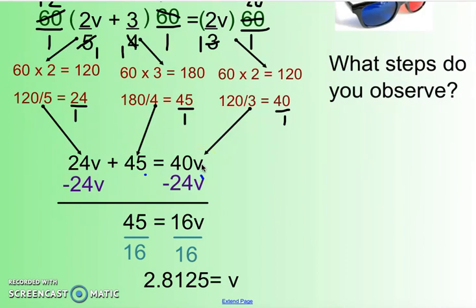I can take 24 and move it over to the other side to be with the 40v, and the way to do that, remember, is do the opposite. If it's positive, then we put minus 24v. So 40 minus 24 is 16. 45 still stayed the same, and the last step was try to get rid of that 16. We're trying to get V by itself, so 16 times V, the inverse of that is divide by 16. So 45 divided by 16 is 2.8125.